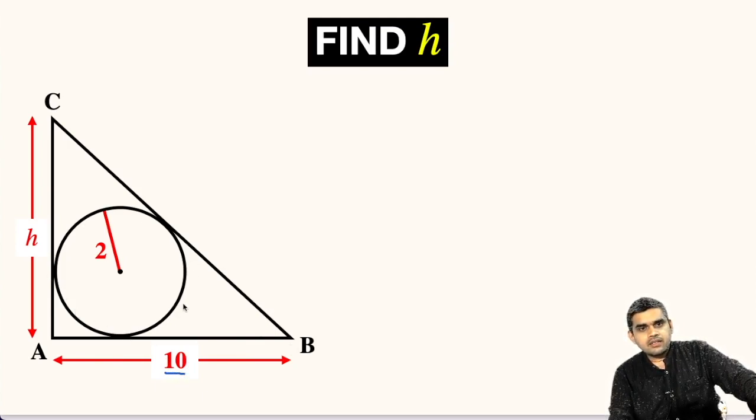Inside this triangle, a circle of radius 2 units is also given, and we are asked to find the measure of side AC of this triangle, which is small h.